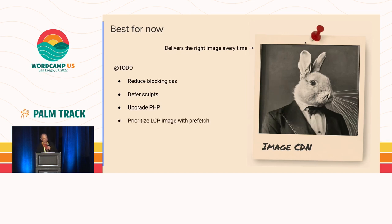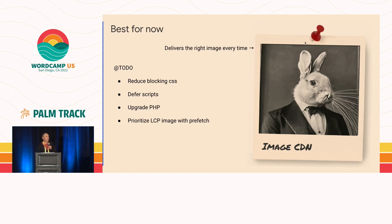We're also looking at this in the Performance Lab plugin, which is prioritizing the LCP image with a new property called prefetch. This informs the browser that it should prioritize the image you've applied the attribute to — so you'd apply that to the main large image you really want the browser to load first.